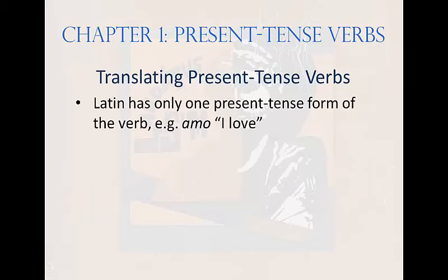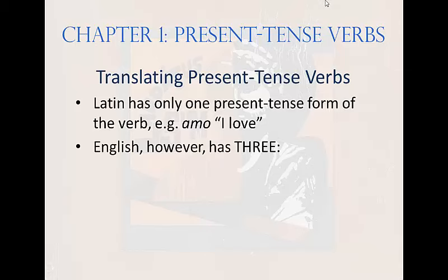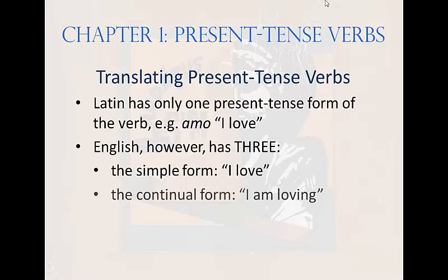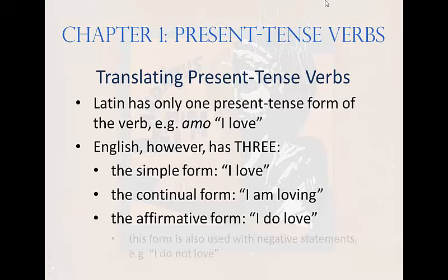Translating present tense verbs: Latin has only one present tense form of the verb — for example, 'amo,' meaning I love. English, however, has three: the simple form 'I love,' the continual form 'I am loving,' and the affirmative form 'I do love,' which is used most often with negative statements like 'I do not love.' Why does English have three present tense forms? I have no idea. But if we were ancient Romans, the Senate would certainly outlaw two of them — after all, exactly how many ways do you need to say 'here comes the enemy'?